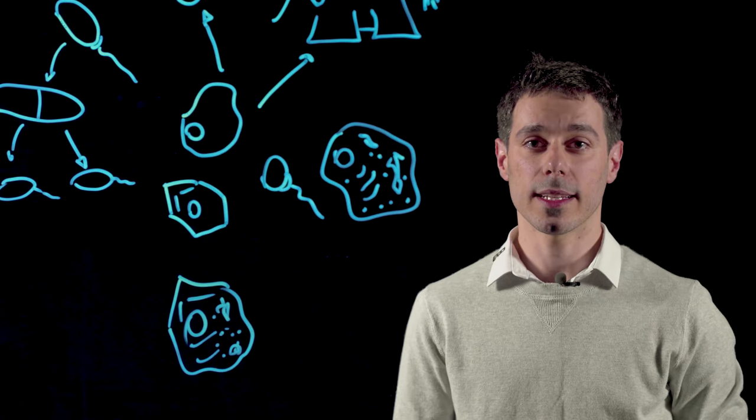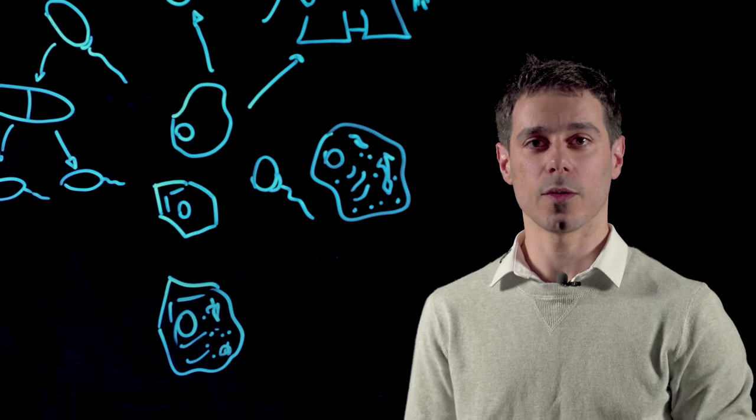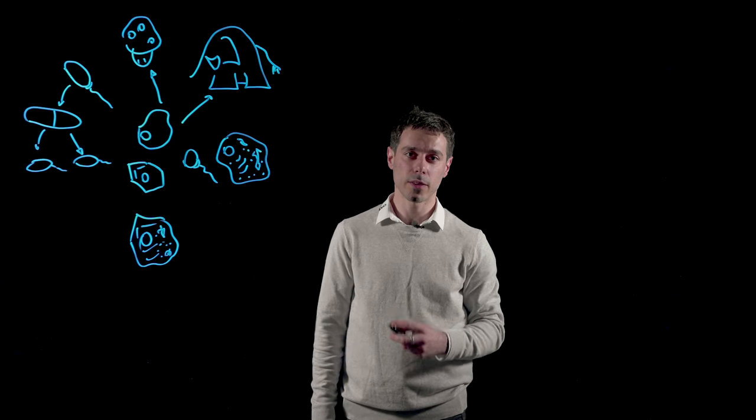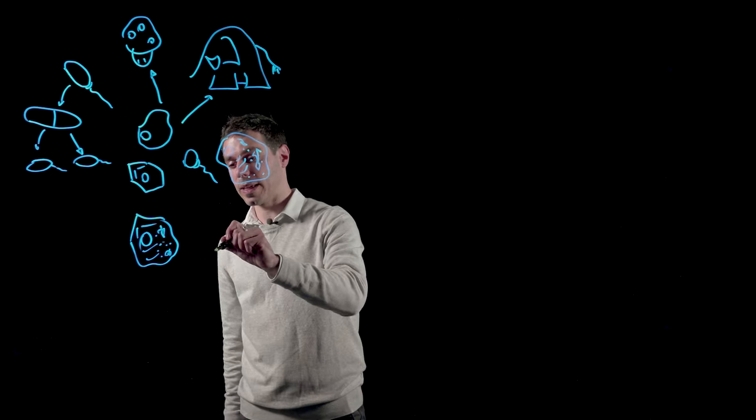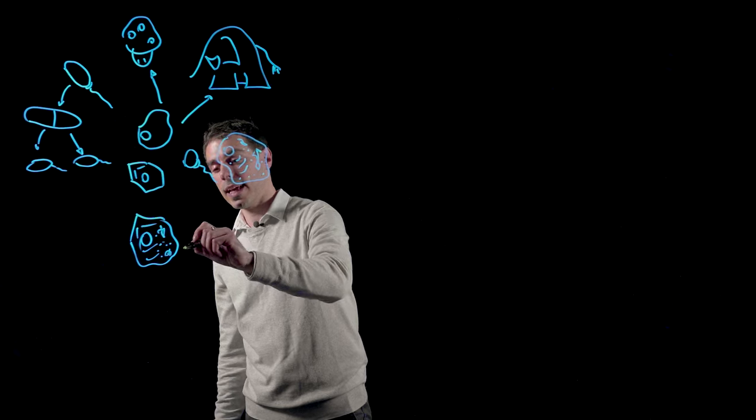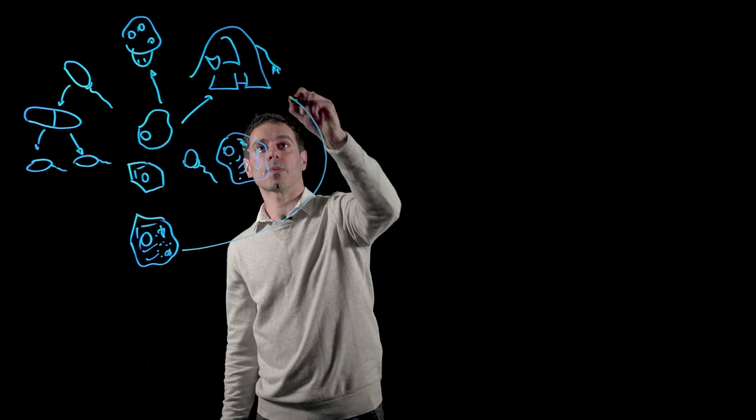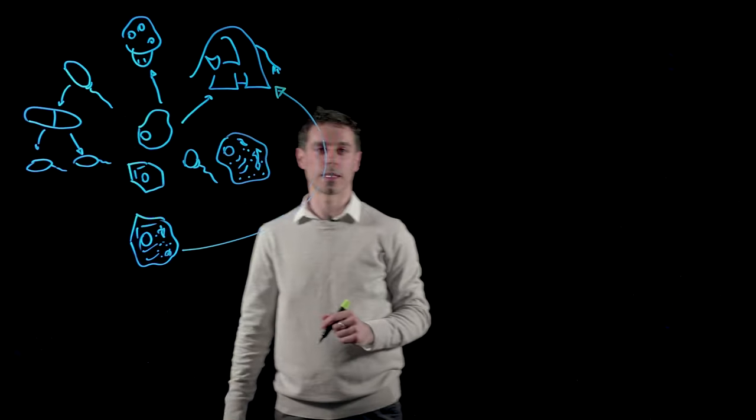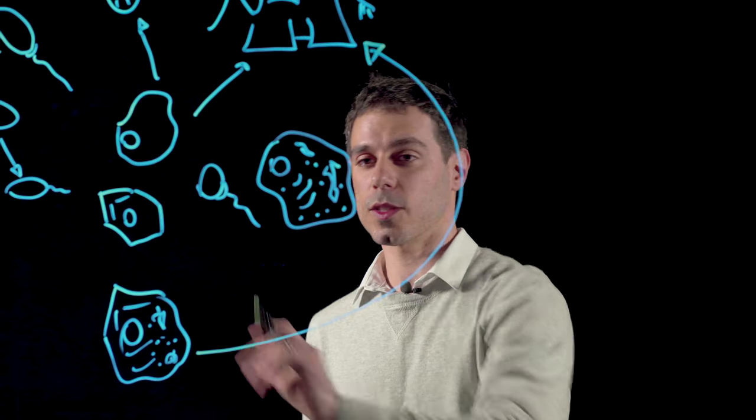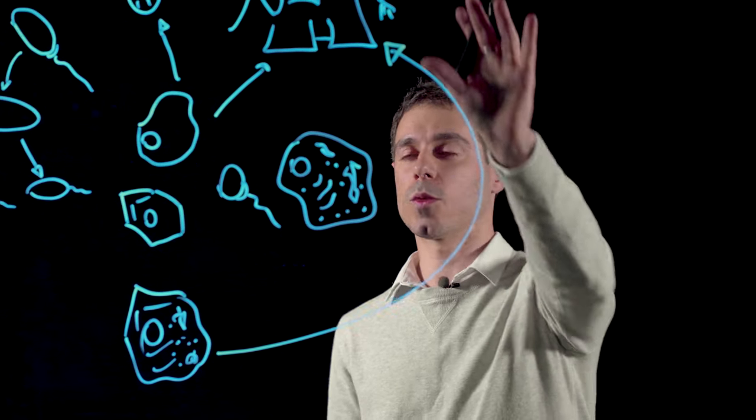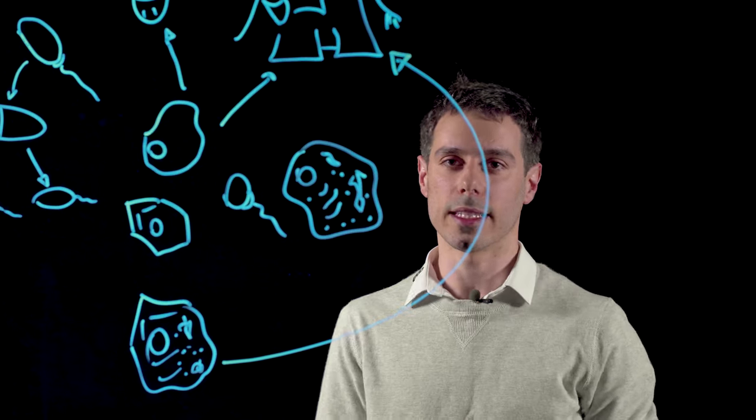We know from microbes today that they can live pretty well on their own. And yet, a couple of billion years ago, an ancient microbe began an evolutionary journey that turned it into the complex organisms we see today. How did a single cell organism evolve into a complex multicellular organism?